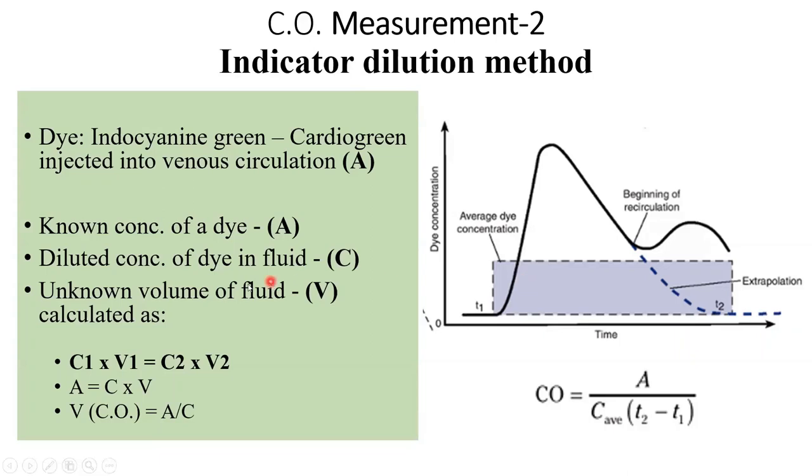Now we put the values in the formula: C1×V1 = C2×V2. We arrive at A (the known amount of dye) equals C (the diluted amount, which is C average) multiplied by the unknown volume V.